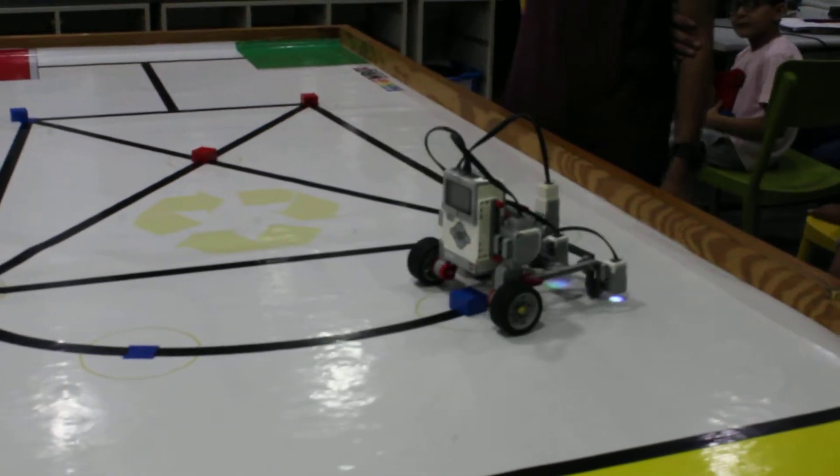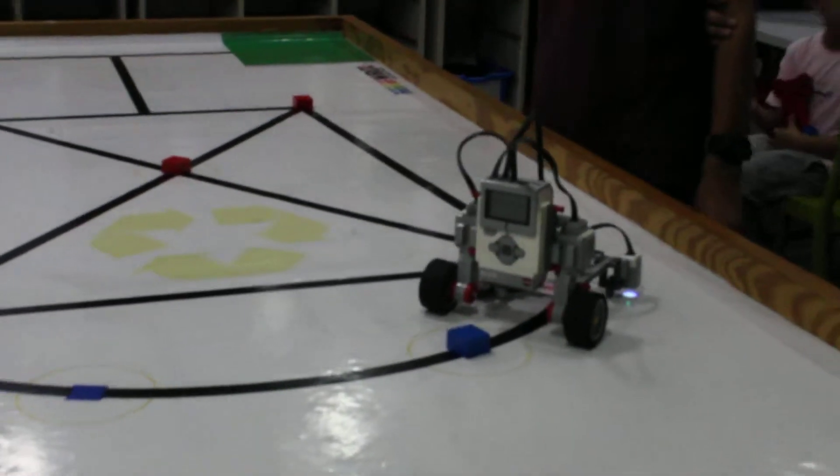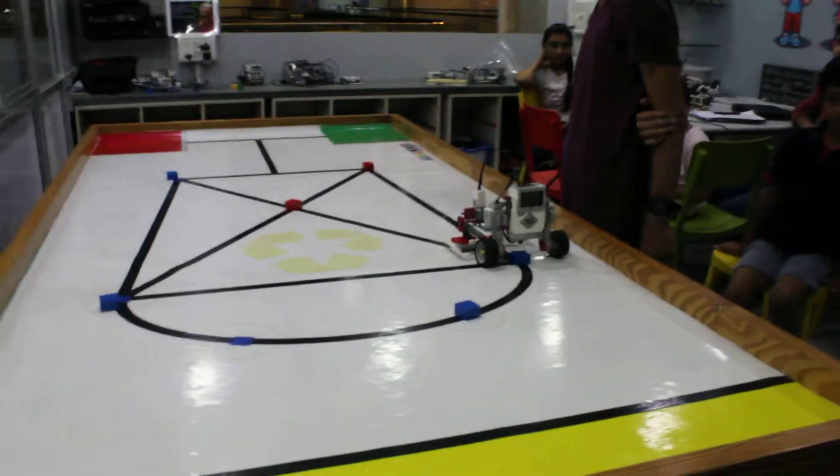This robot is mainly made for collecting all the waste and it will drop it in the yellow area which is the garbage bin.